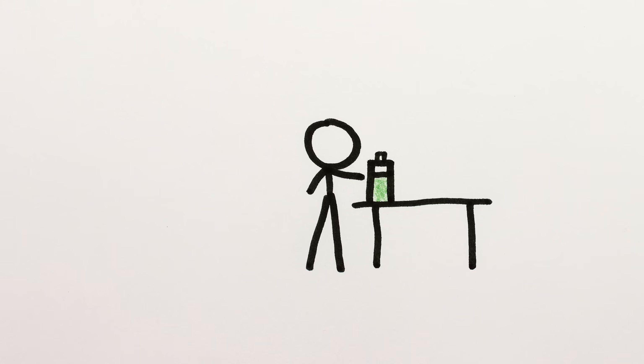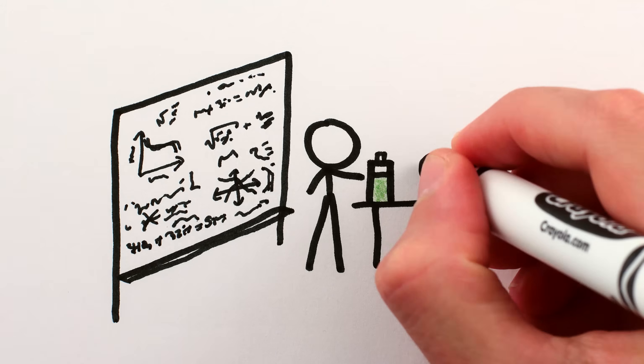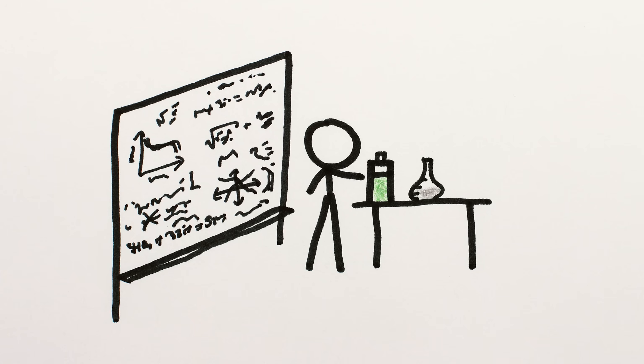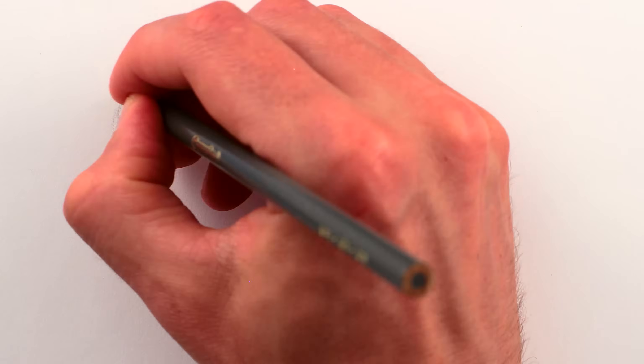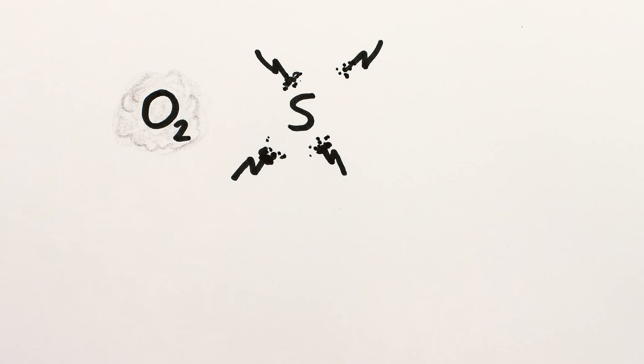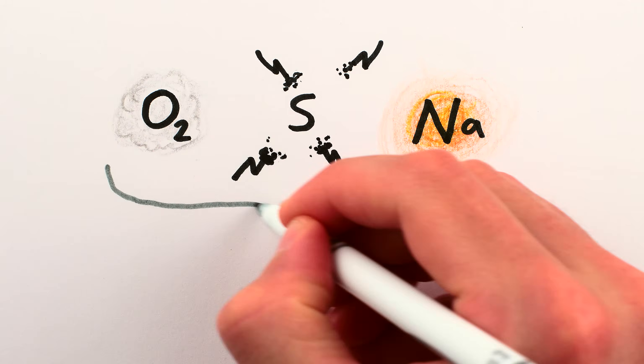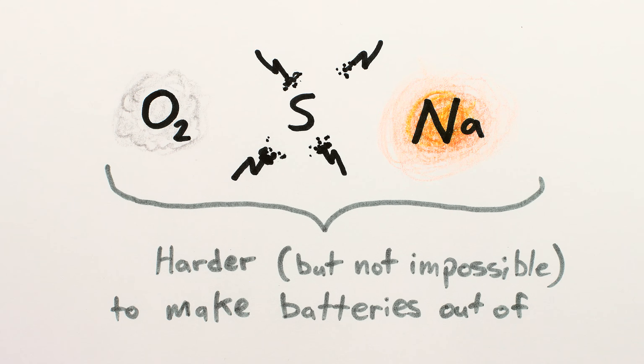In practice, the electrochemistry of batteries is incredibly complicated, and requires combining metals that work together chemically, electrically, and controllably at normal temperatures and pressures. For example, oxygen is a gas, sulfur is a horrible conductor, and sodium needs to be molten – challenges to using any of them to make batteries.